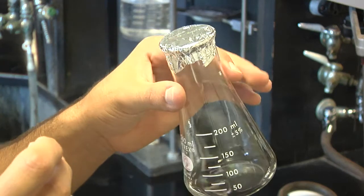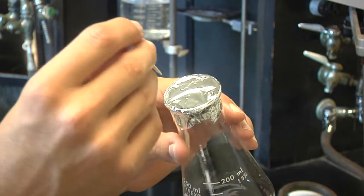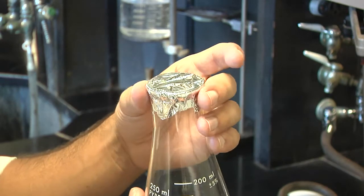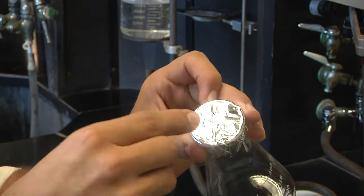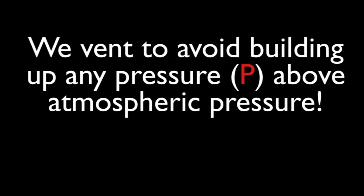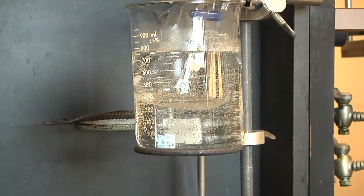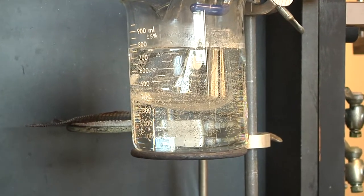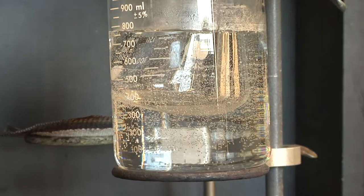Cover your volatile liquid with a little bit of aluminum foil in order to prevent excess evaporation of your liquid. Punch a small hole into the top of the aluminum foil to allow venting. It will be very difficult to observe your volatile liquid being completely removed, so I suggest tilting your Erlenmeyer flask on its side.